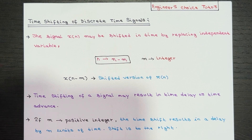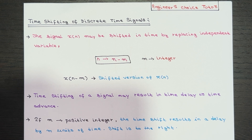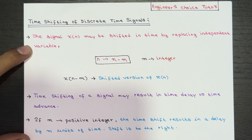Get ready for an exciting lecture where we dive into the fascinating world of time shifting of discrete time signals. What exactly is time shifting? It's the process of shifting a signal denoted as X of n in time by replacing the independent variable n with n minus m, where m is an integer.